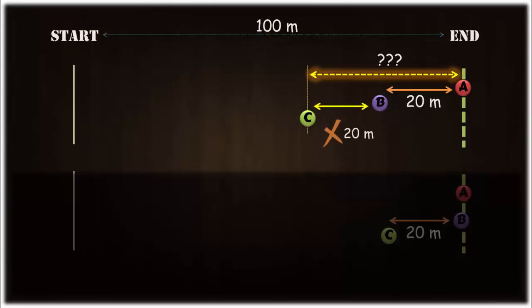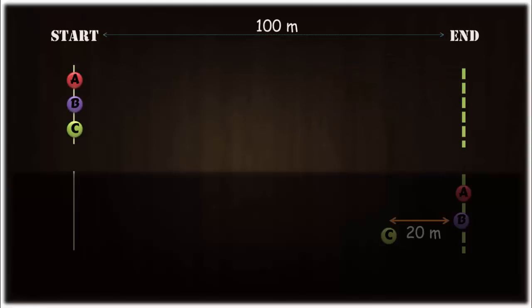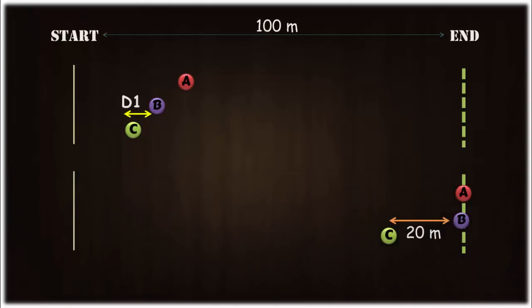So first we will prove it visually and then will move towards the calculation. Here is how the race progresses. They all run at their constant speeds and the distance between them starts to increase gradually. At this point you can see the distance between B and C is much less than 20 meters.